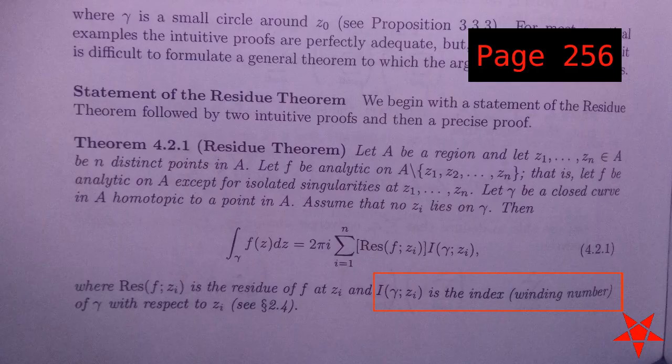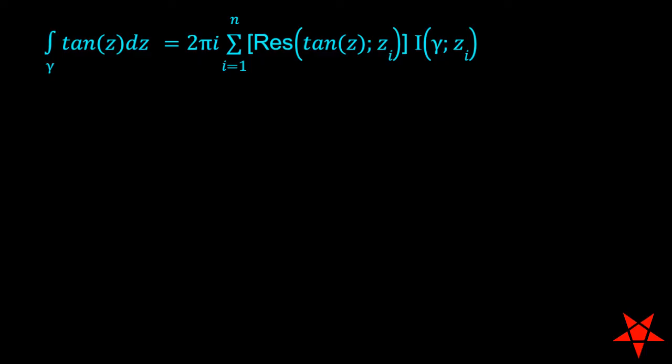Going back to formula 4.21 on page 256, we must keep in mind that for our purposes the winding number i is either zero or one depending upon the location of the singularity.